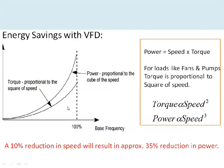Energy savings are most evident in loads like fans and pumps, where torque is proportional to the square of the speed. Since power equals torque times speed, power is proportional to the cube of the speed. In these applications, a 10% reduction in speed results in a very drastic reduction in power — approximately 35% reduction in power can be achieved. This is where the VFD plays a vital role in energy savings; if the application does not require base speed, you can operate at a lower speed for significant energy savings.